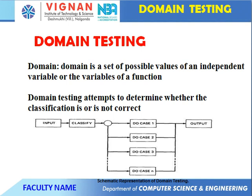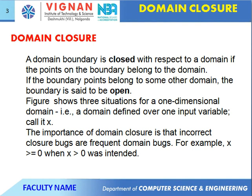These are the integrated outputs. Next, domain closure. A domain boundary is closed with respect to a domain if the boundary points belong to the domain. If the boundary points belong to some other domain, the boundary is said to be open. The figure shows three situations for a one-dimensional domain defined over one input variable called X. The importance of domain closure is that incorrect closure causes frequent domain bugs.